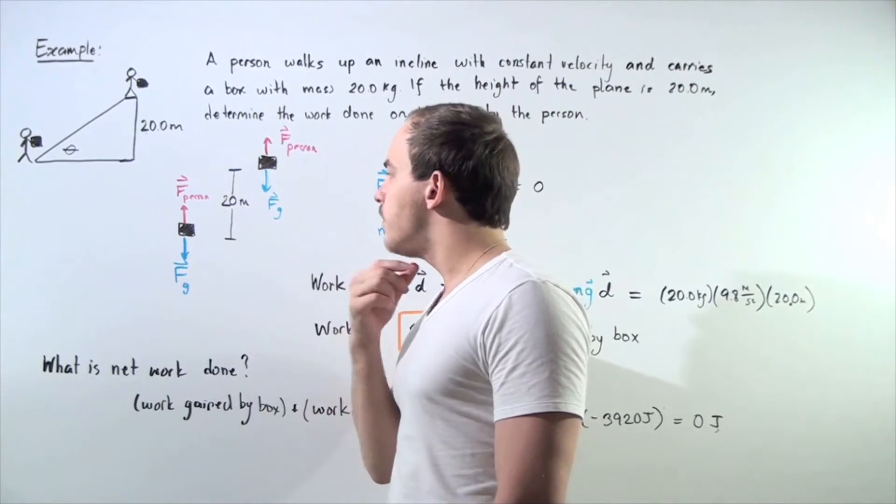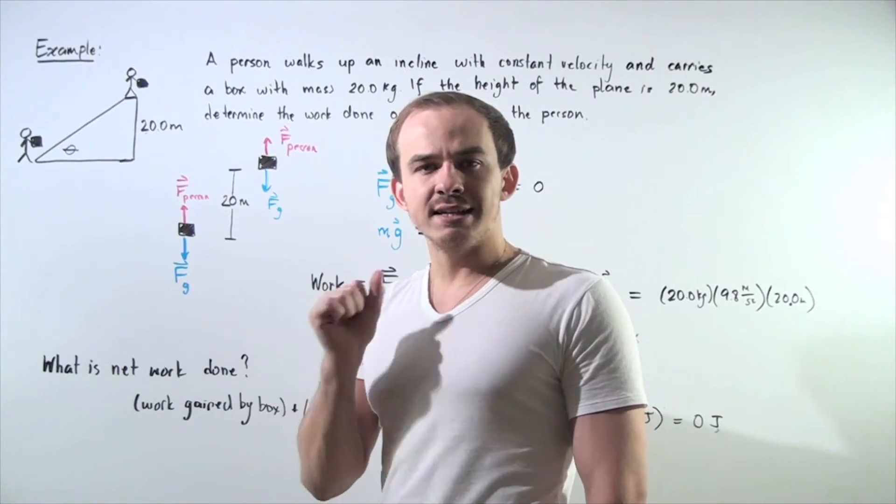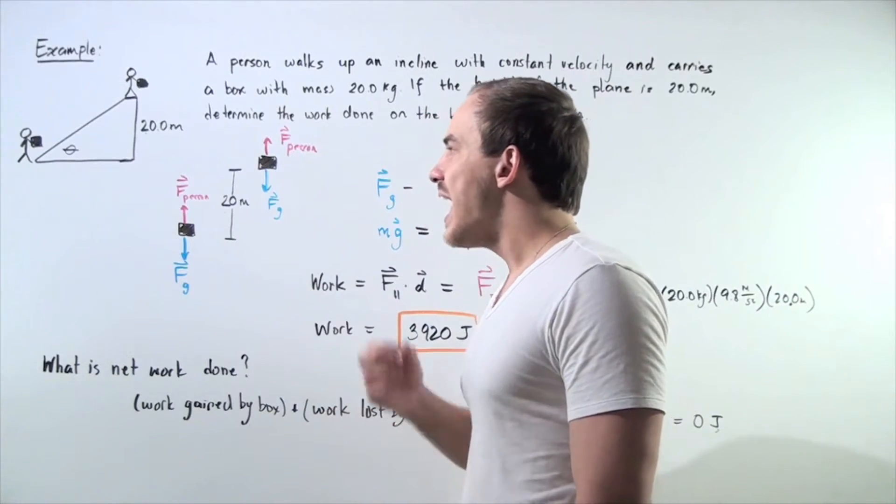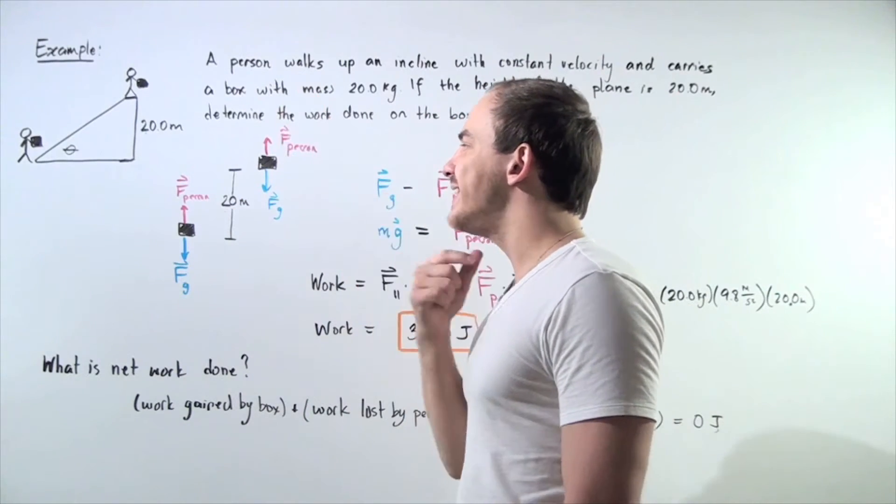Let's look at our free body diagram for the box. We have two forces acting on the box: the force of gravity pointing downward and the force the person creates on the box pointing upward.